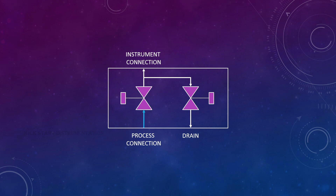Now the instrument is connected and ready to measure the process medium pressure. What I have to do now is open valve 1. When I open this valve, the process medium will enter into the instrument as well as into the drain tube.